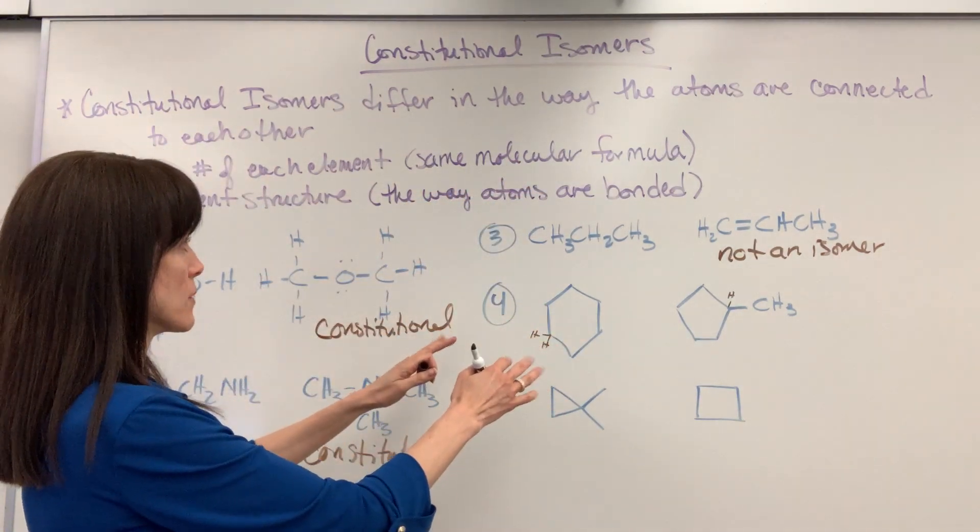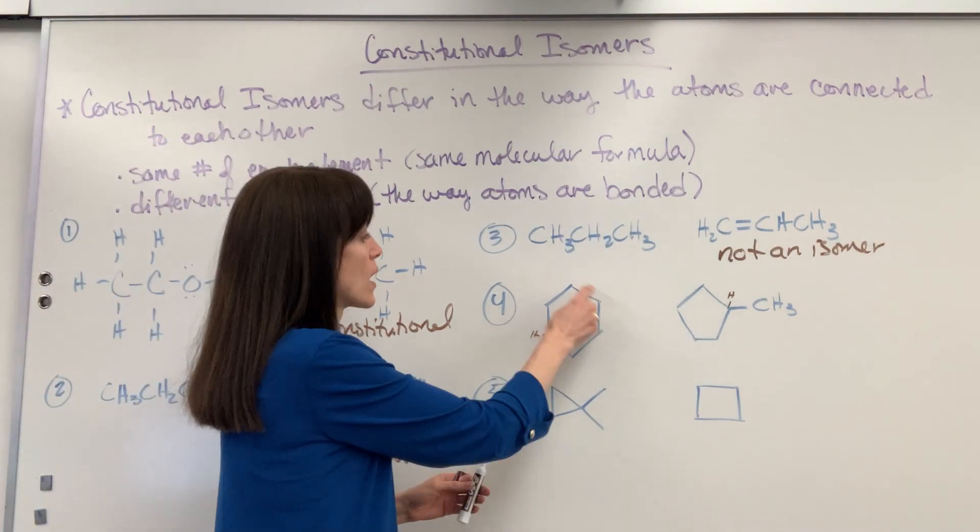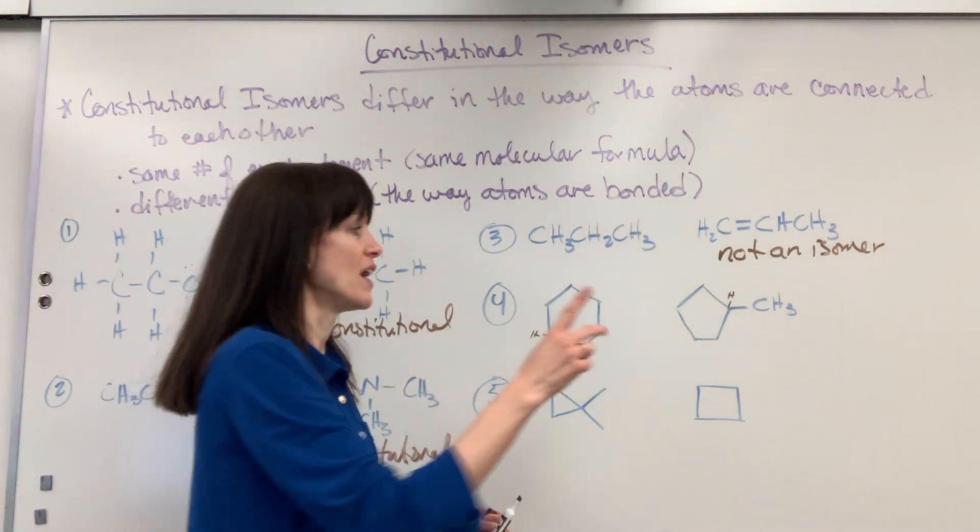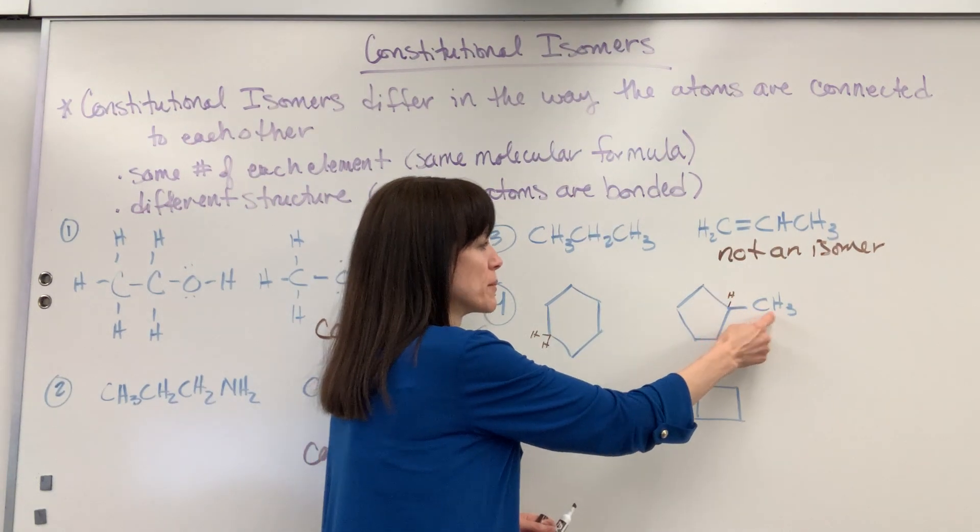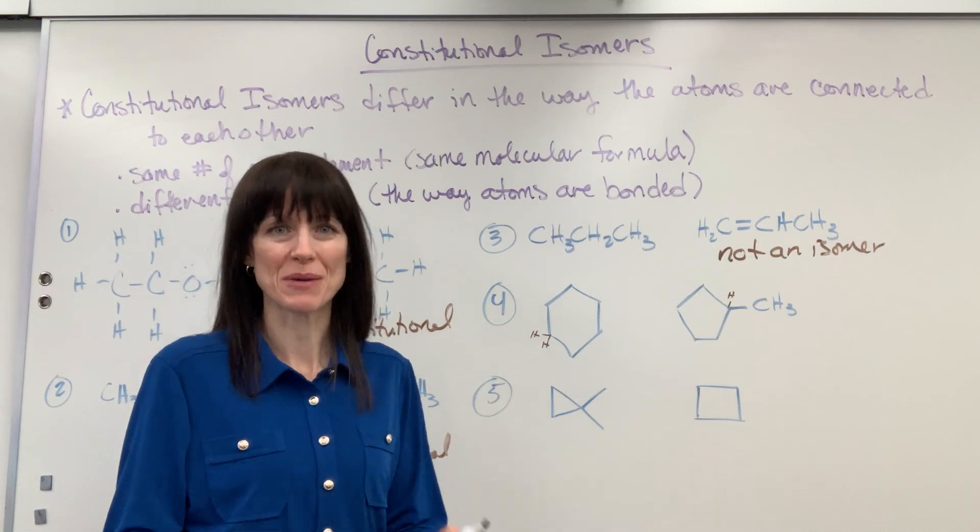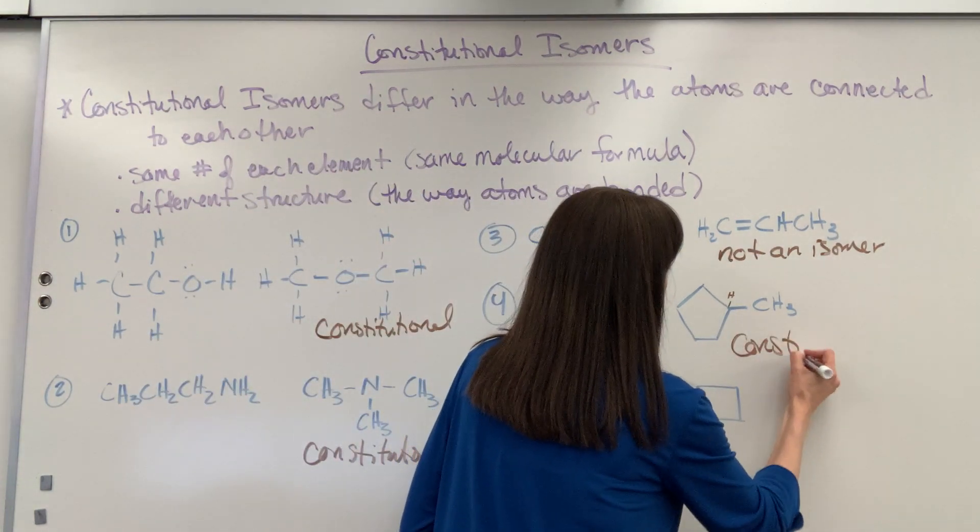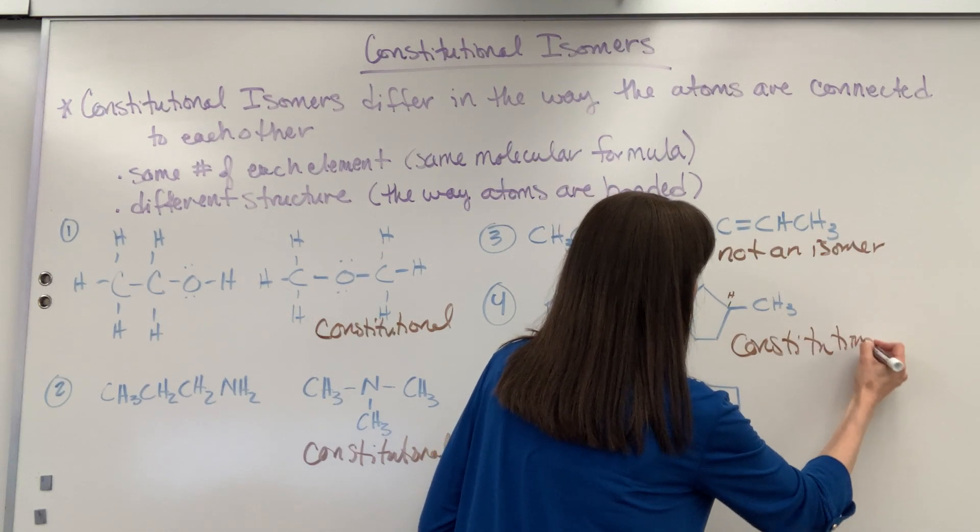And then we look at the bonding and we go, oh, these atoms are bonded differently. Here every carbon has 2 hydrogens. On this one you have 1 carbon with 1 hydrogen, 1 carbon with 3 hydrogens. So the bonding's different, but you have the same number of elements. That's a constitutional isomer. Constitutional isomer.